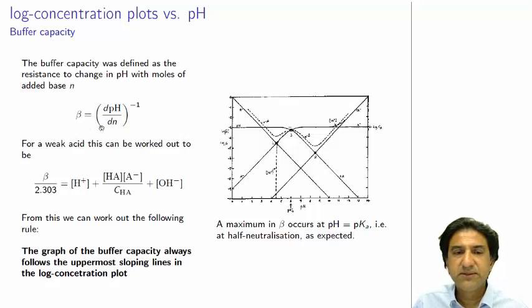So whenever this is a small number, the change in the pH is not very much. If we take the reciprocal, it gives us a big number. So that means there's a big buffer.